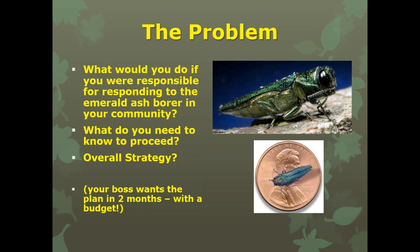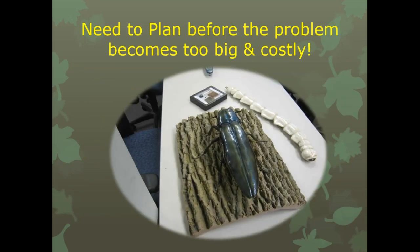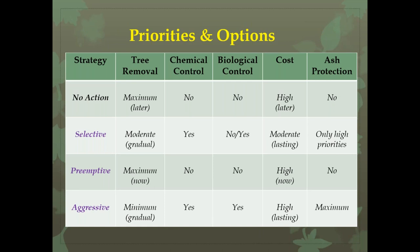We've seen EAB coming for 15 years, but until it gets on your doorstep it's hard to get motivated to prepare — and that's what we need to do soon. There's a table that lays out different management strategies. 'No action' is not an option for public works because we're concerned about public safety. The aggressive option provides maximum ash protection but almost nobody can afford that.